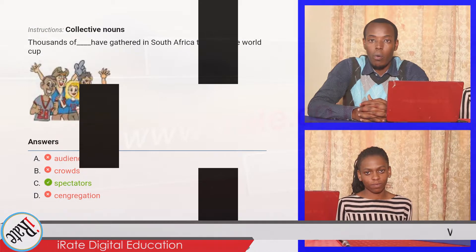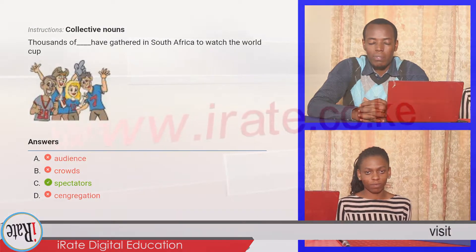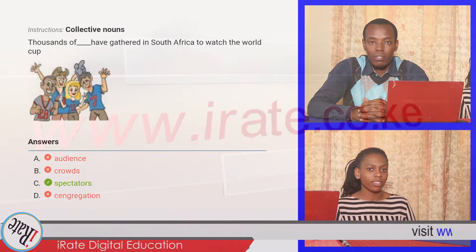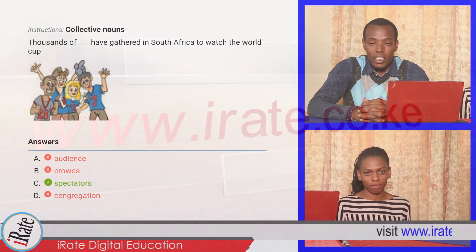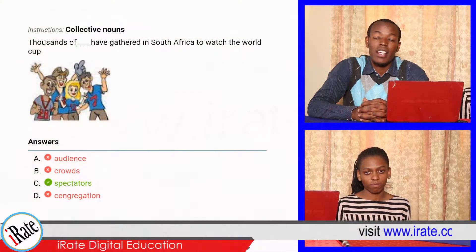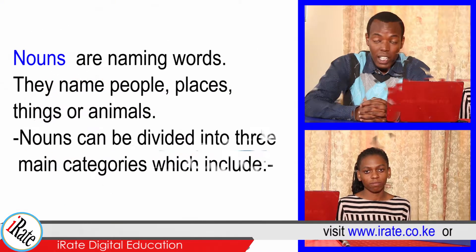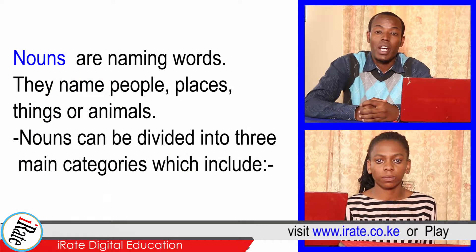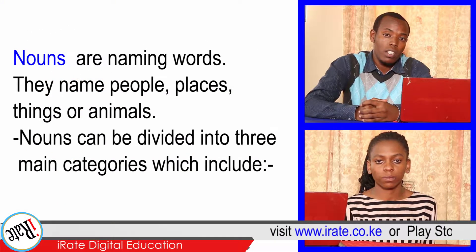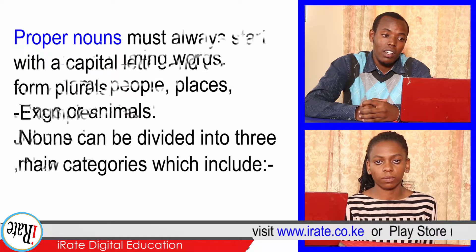Thousands of Dutch have gathered in South Africa to watch the World Cup. The answer is spectators. That is correct. This falls under the topic nouns. Nouns are naming words. We have three groups of nouns.